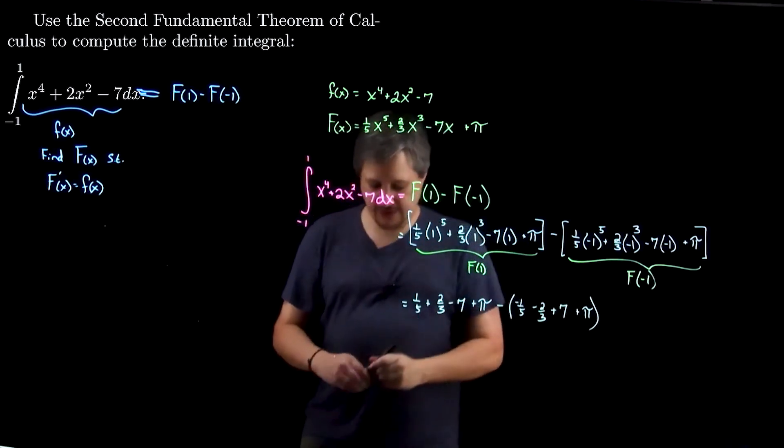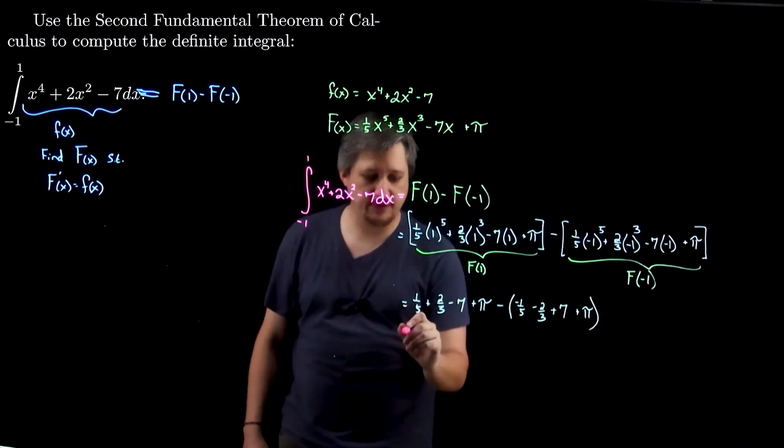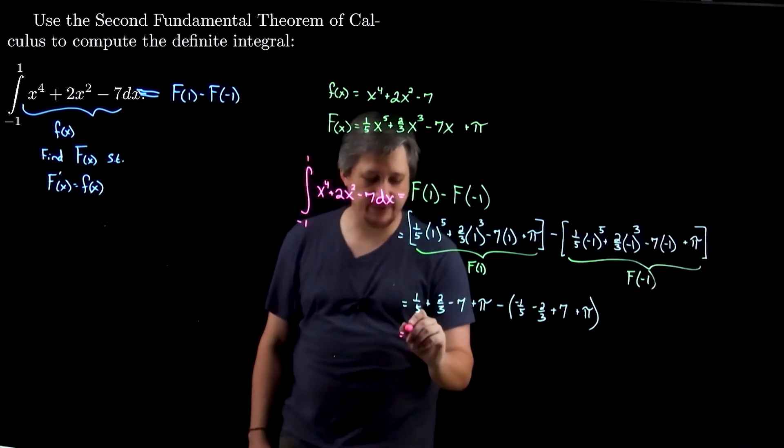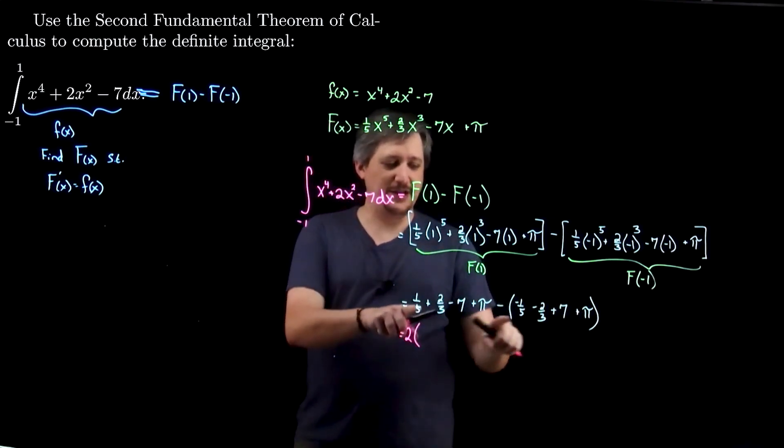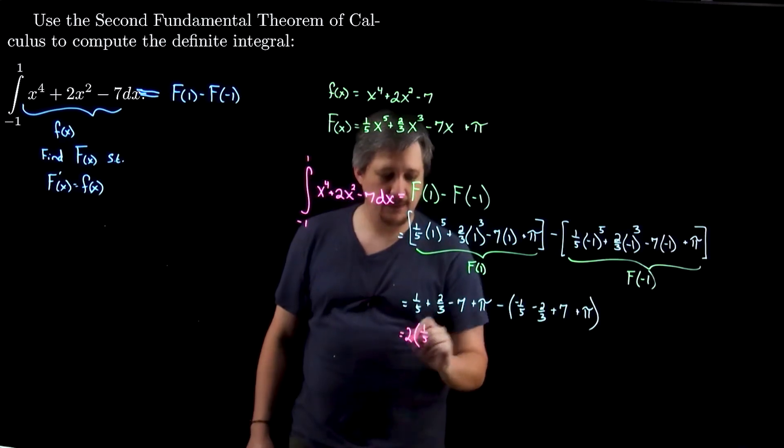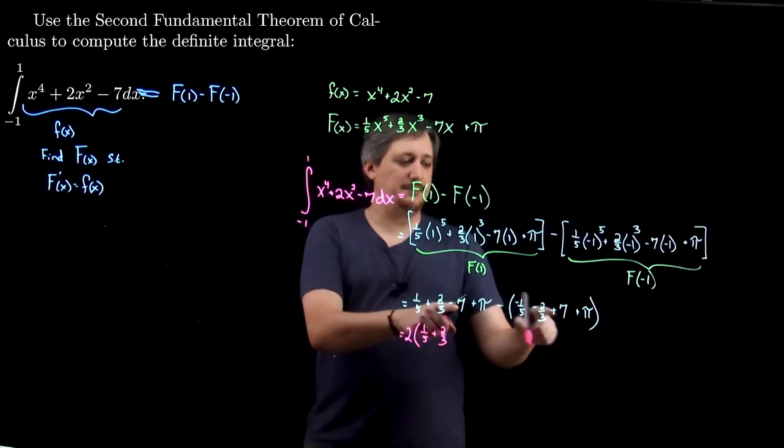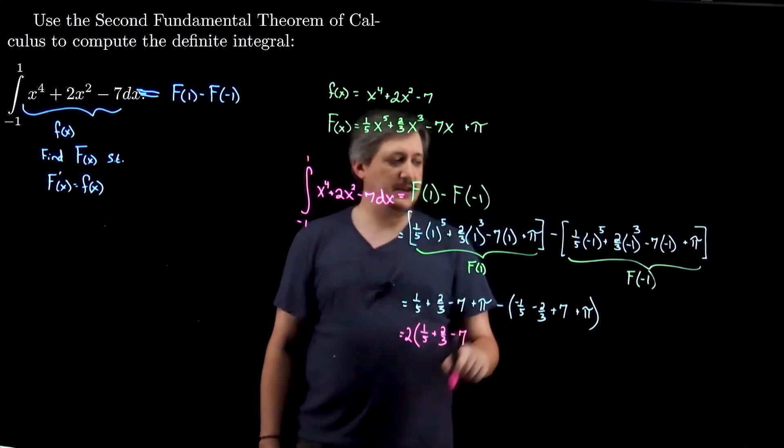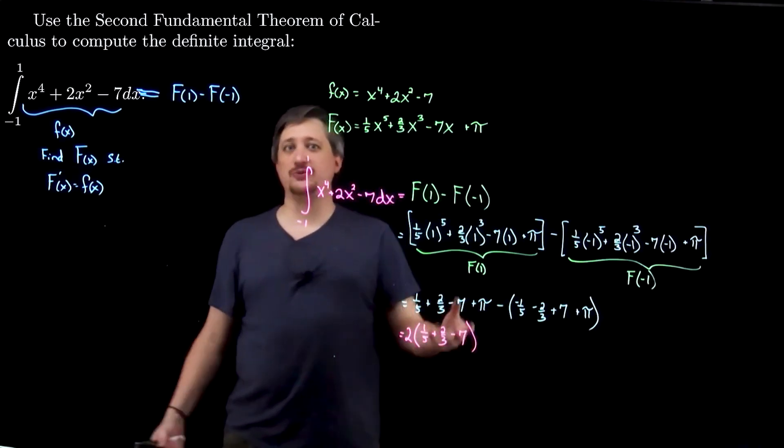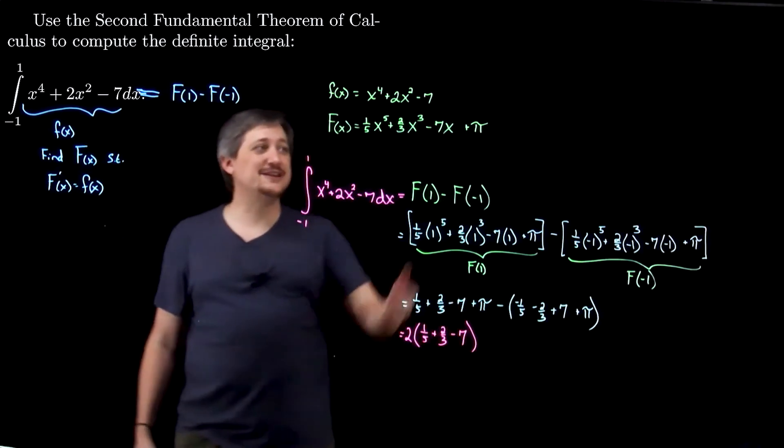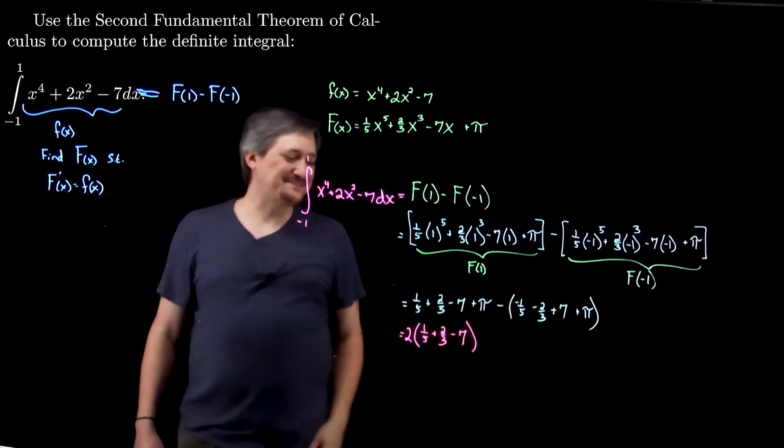So, then, I would distribute the negative. But if I do that, I'll notice that I will get negative negative, so that's going to be 1 fifth plus 1 fifth. I'm going to write this in a weird way, but I'm going to make a cool observation. That is not always true. This is true with this specific function, just with the way the numbers work out. So, I'm going to get 2 one-fifths. I'm going to get 2 thirds minus minus, so I'm going to get plus 2 two-thirds. I'm going to get minus 7 minus 7, so I'm going to get 2 minus 7s. But then, I'm going to get pi minus pi. So, the pi goes away.